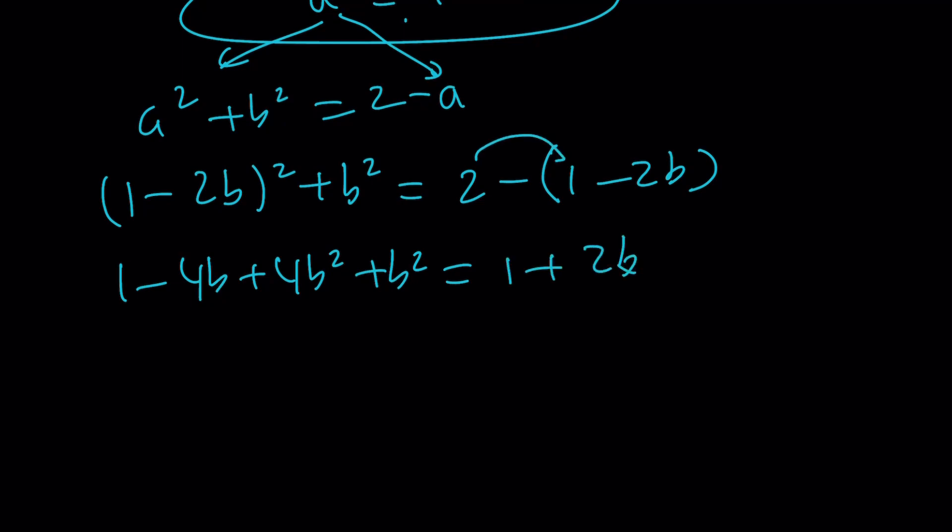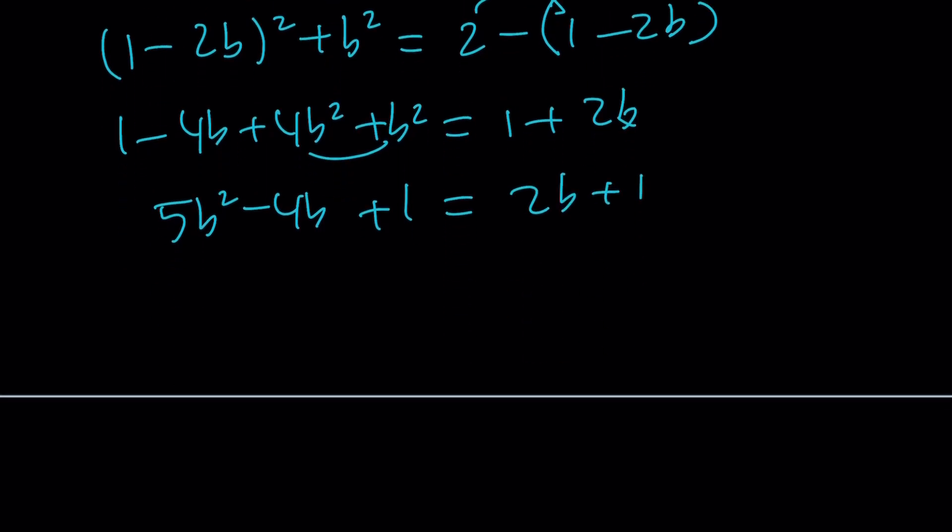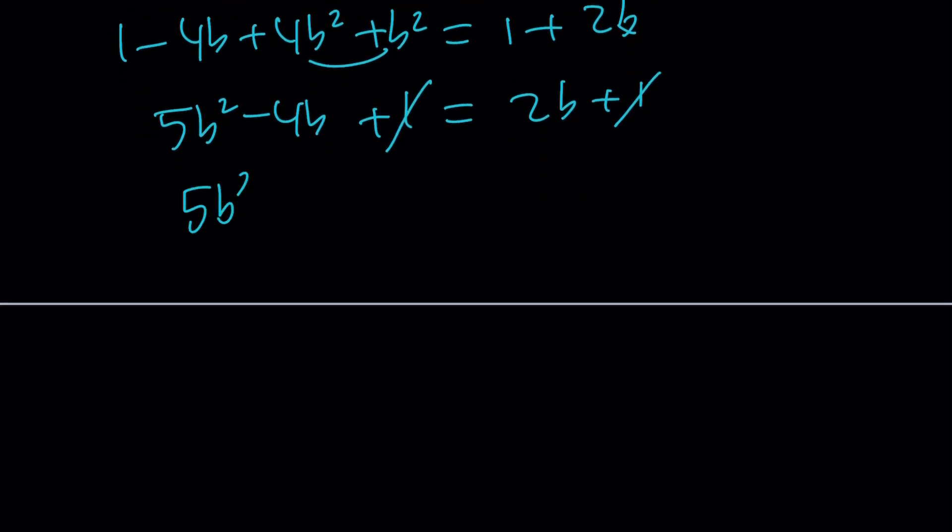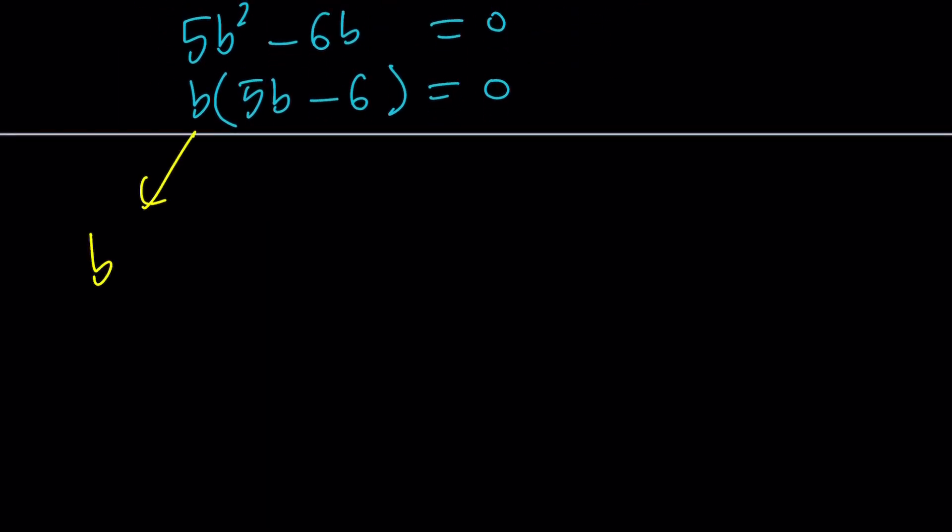And now 5B squared minus 4B plus 1 equals 2B plus 1. Let's turn this into a full quadratic, but guess what? One cancels out, so that's going to be even easier. 5B squared minus 6B equals 0. This is factorable. Take out the greatest common factor. And that gives you B times 5B minus 6 equals 0. From here, we get two solutions, and we're going to explore both of them. One of them is B equals 0, and the other one is B equals 6 over 5.